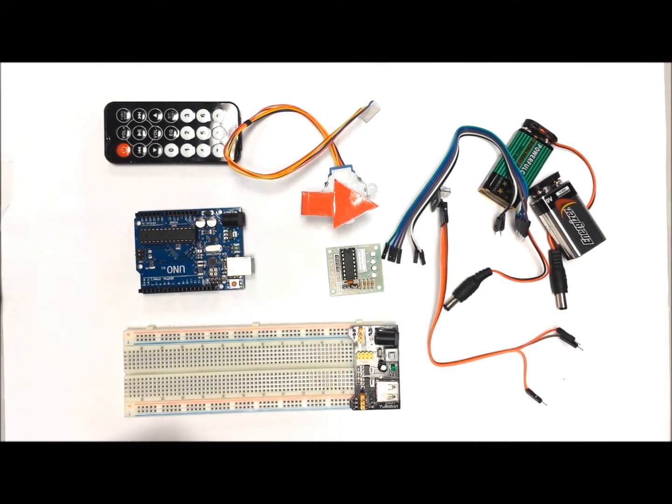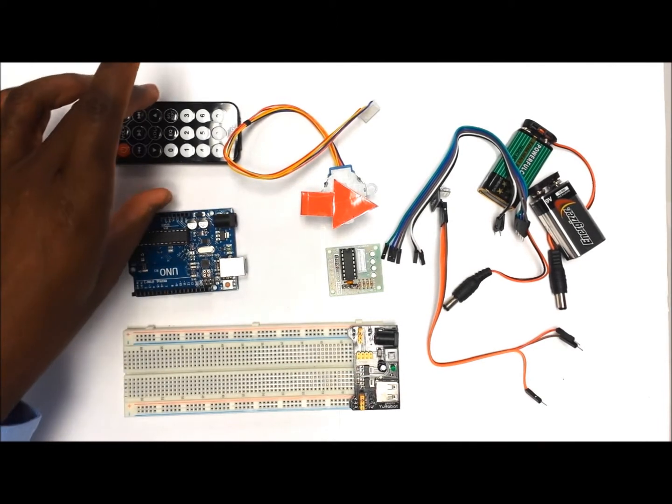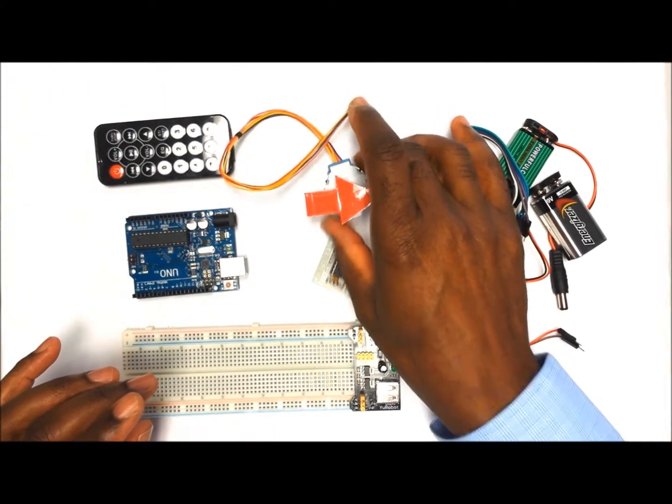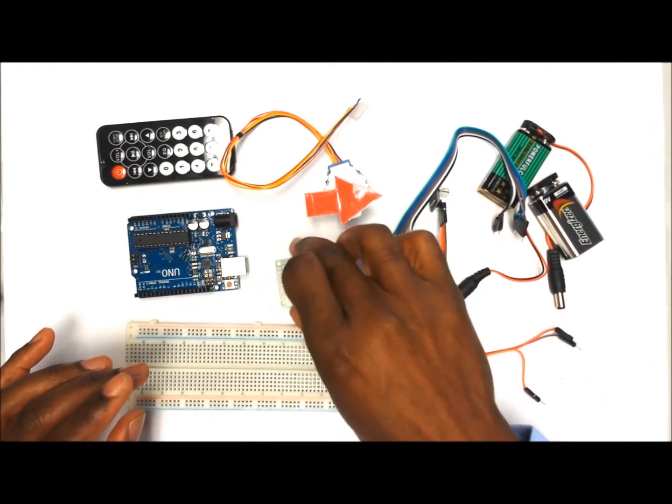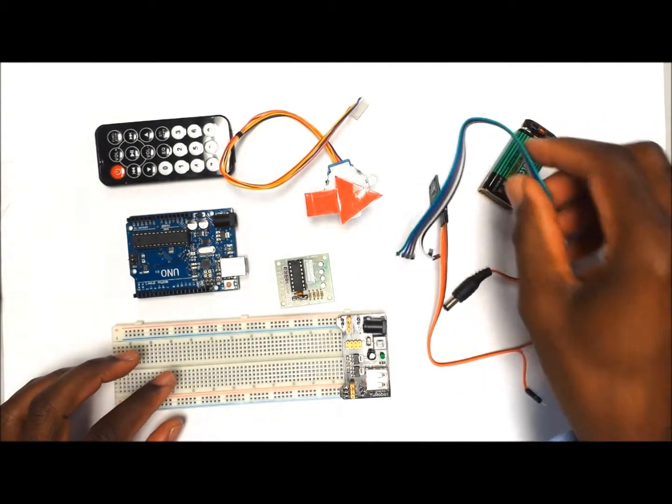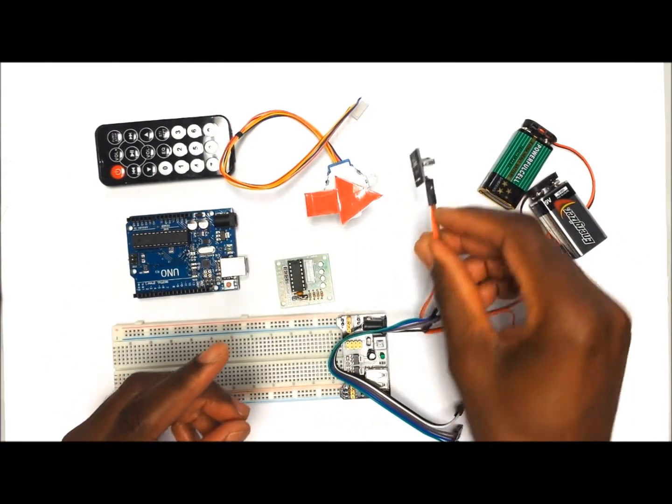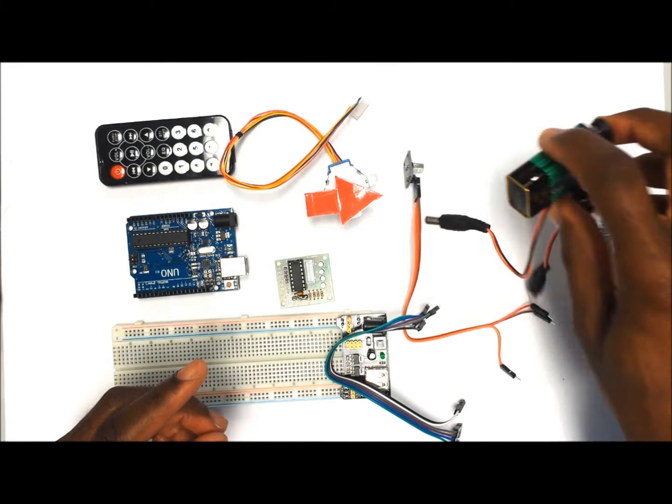For this project we are going to need an Arduino, an IR remote, a stepper motor, a stepper motor driver, breadboard, a couple of jumper wires, an IR receiver, and two sources of power.